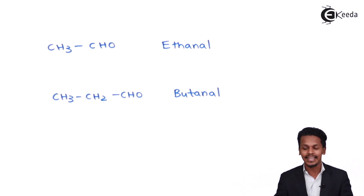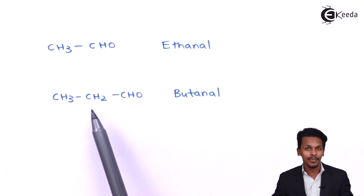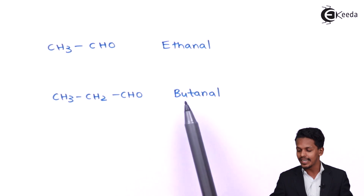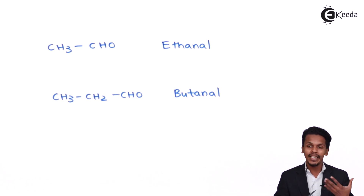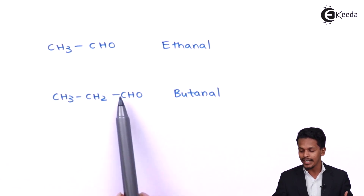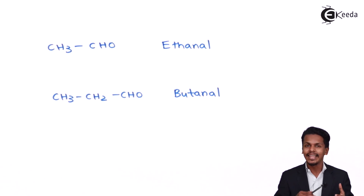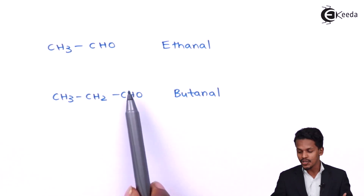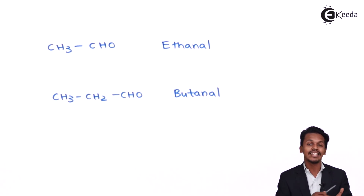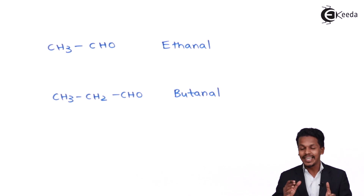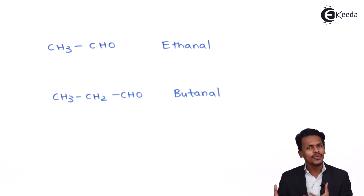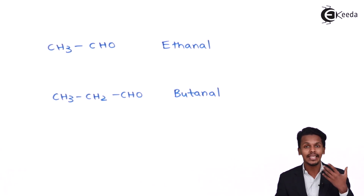For now, let us understand these two examples. The second organic compound has the name butanal, which comes from the fact that it consists of three carbon atoms along with an aldehyde group, that is CHO. So this was related to aldehydes — we discussed their examples, general formula, and functional group.